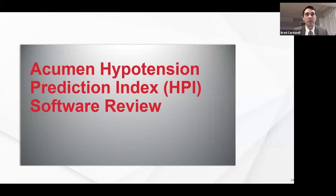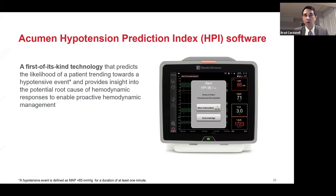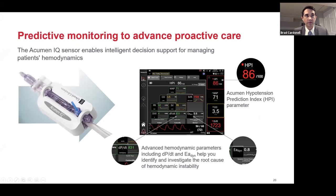Let's take a clinical look at the Acumen Hypotension Predictive Index. Acumen HPI software is a new technology that predicts the likelihood of a patient trending towards a hypotensive event, using that insight and additional parameters to find the root cause and proactively prevent hypotension before it occurs. It consists of an Acumen IQ sensor or transducer and an advanced hemodynamic monitor, with secondary parameters such as cardiac output, cardiac index, EA-dyne, dP/dT as a measure of contractility, stroke volume variation, pulse pressure variation, and the HPI number.